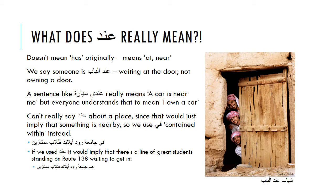The question is: what does عَند really mean? It doesn't actually mean 'to have' — it's not a European-type verb like the English 'to have.' Originally it meant something like 'at' or 'near,' and it still does. So we can say, for example, that somebody is عَند الباب — meaning they're waiting at the door. So a sentence like عَندي سيارة originally meant something like 'a car is near me,' but everyone understands that to mean 'I own a car.'